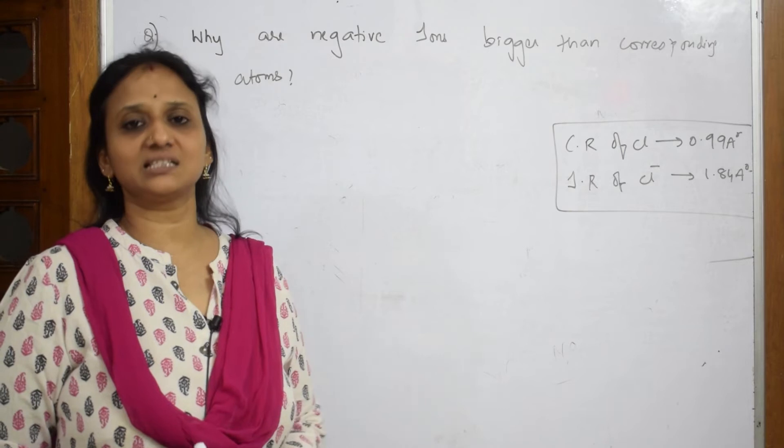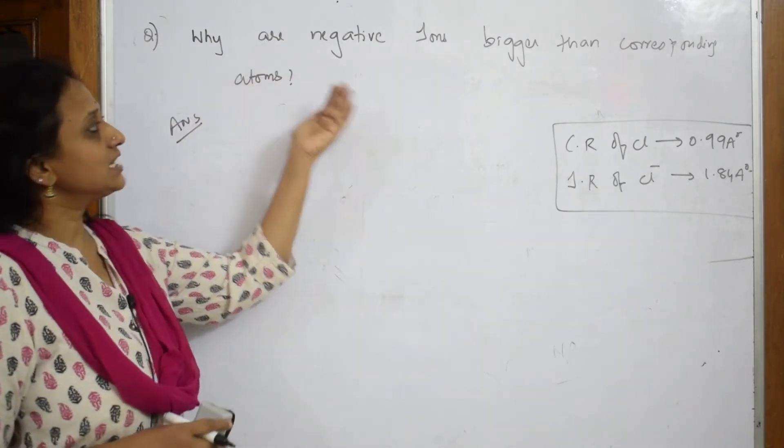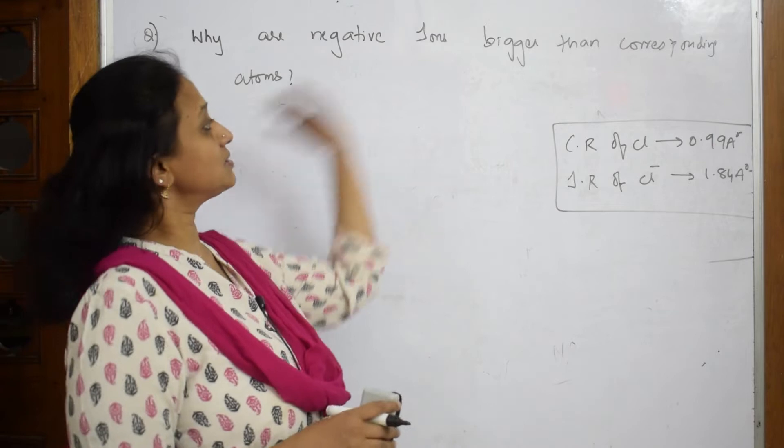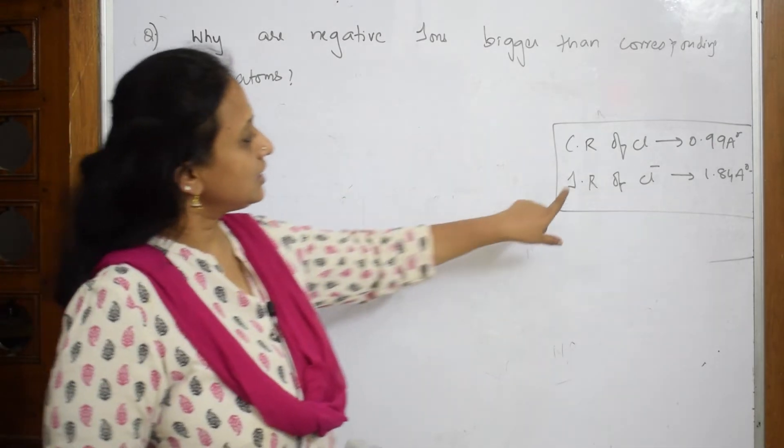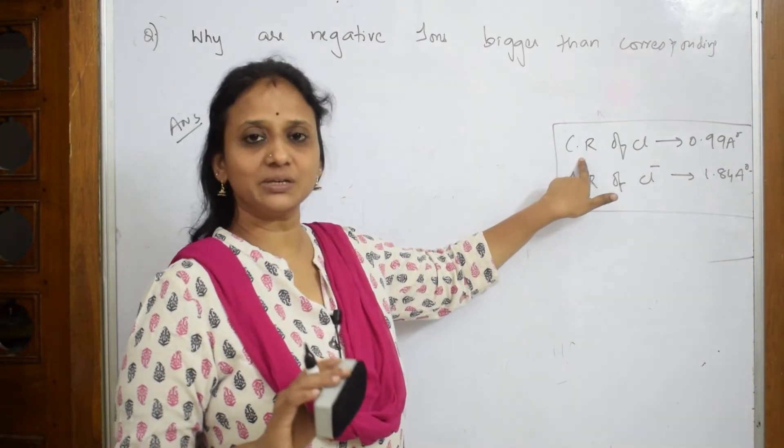So what do they give? Why are negative ions—nothing but anions—bigger than the corresponding atoms? If I see here, why did I take covalent radii?